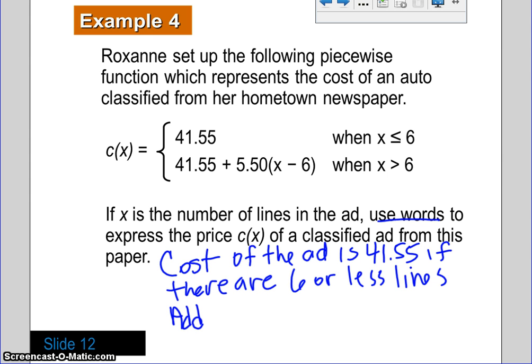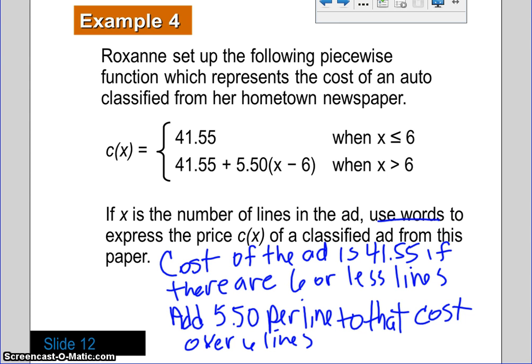So, here you're going to say the cost of the ad is $41.55 if there are six or less lines. Add $5.50 per line to that cost for over six lines. And, that's all you need to do. So, the cost of the ad is $41.55 if there are six or less lines. If there's more than six lines, you're going to add $5.50 for every line over those six lines.